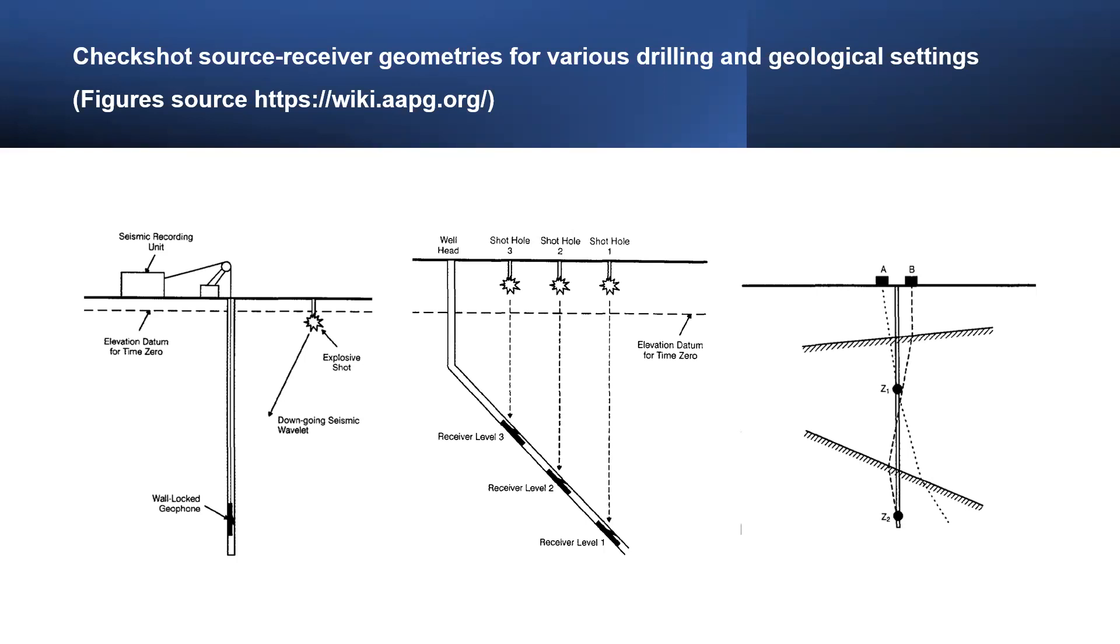Consequently, if a well is deviated, the surface position of the source should be readjusted each time the downhole receiver is moved to a new depth level, as shown in the figure, so that the travel path always remains as vertical as possible. As the receiver moves away from the wellhead, we also move the shot point so that the travel path between source and receiver remains vertical.